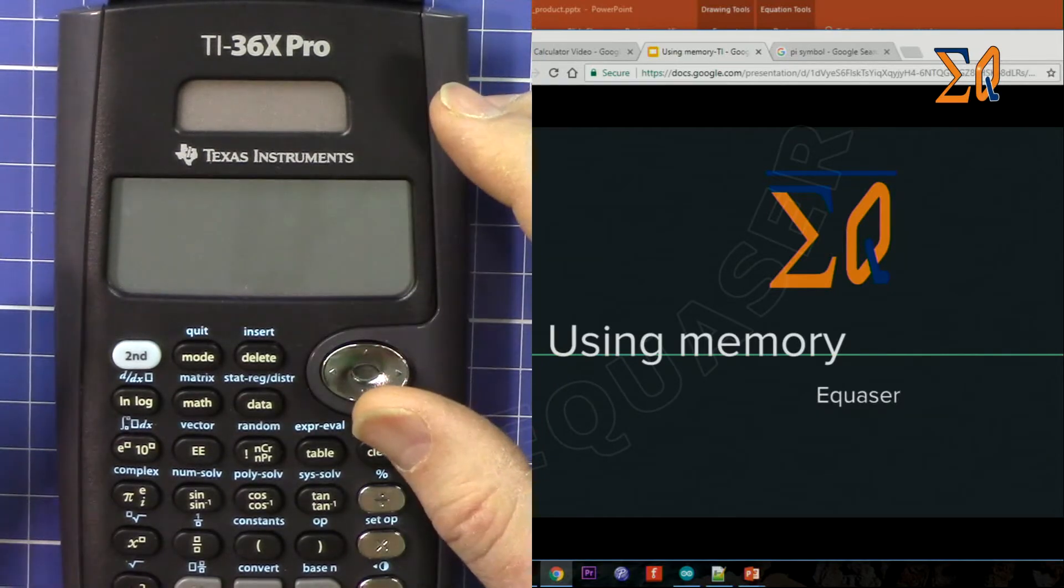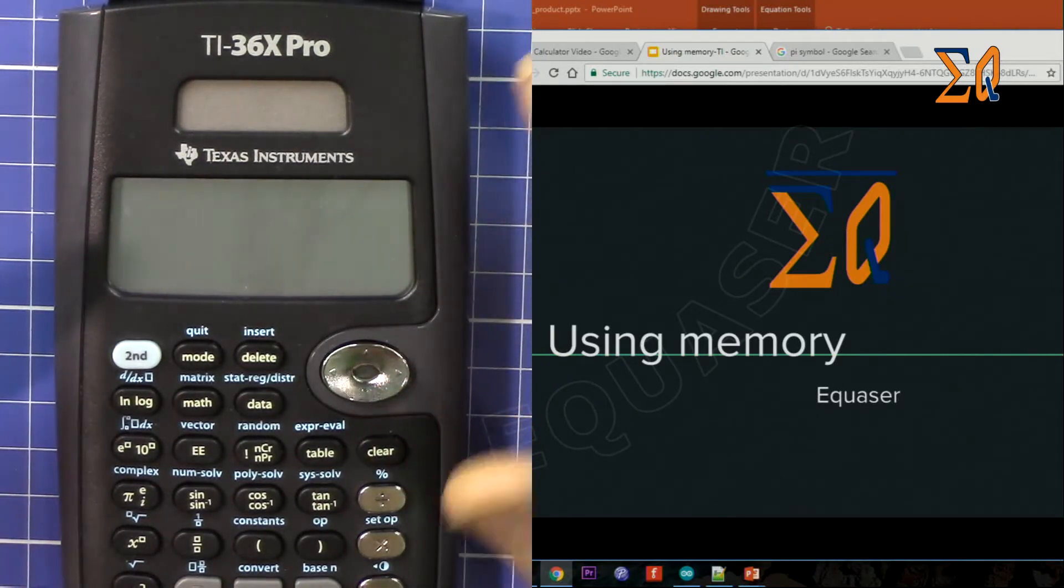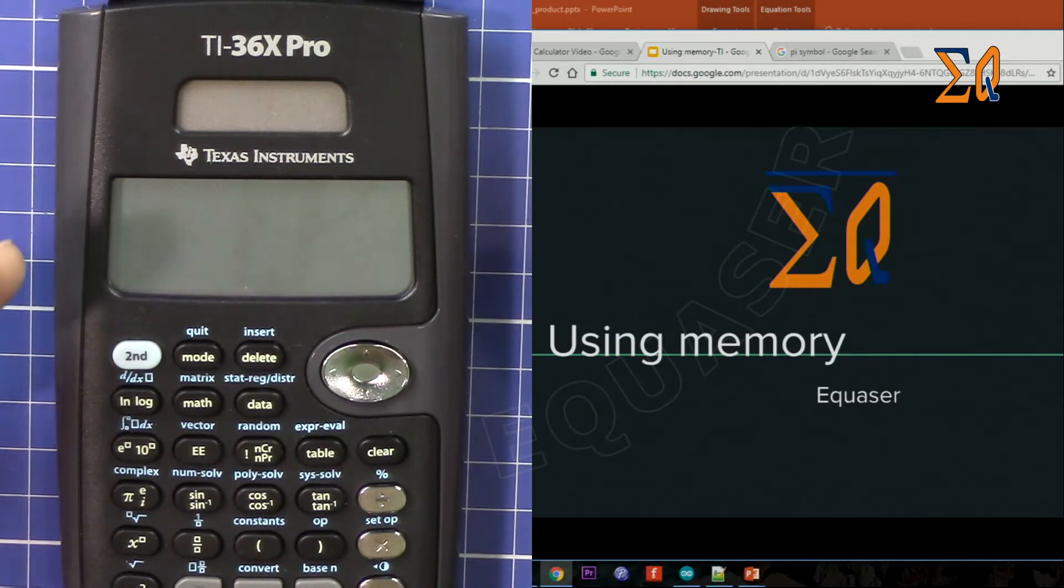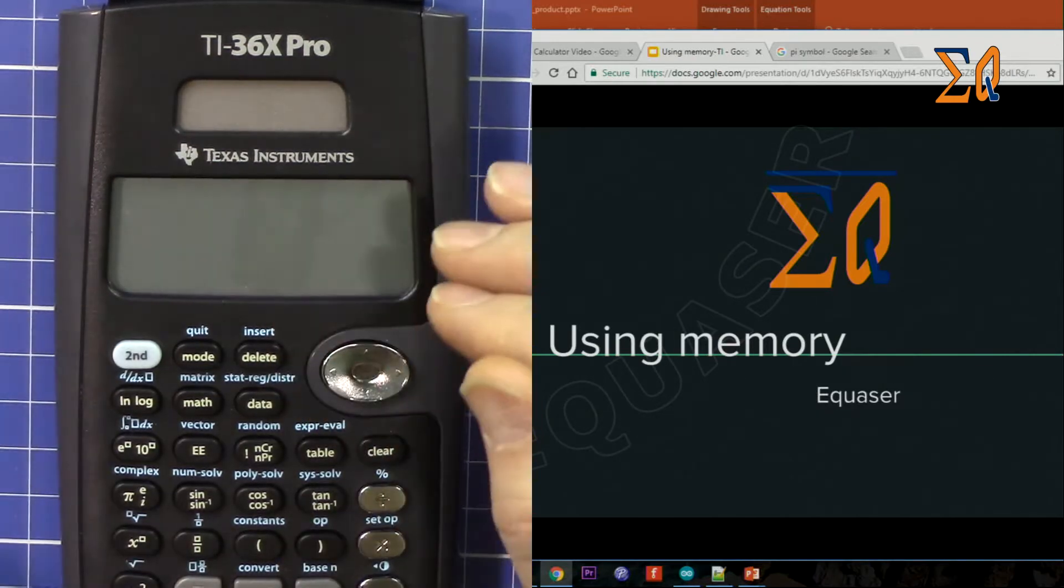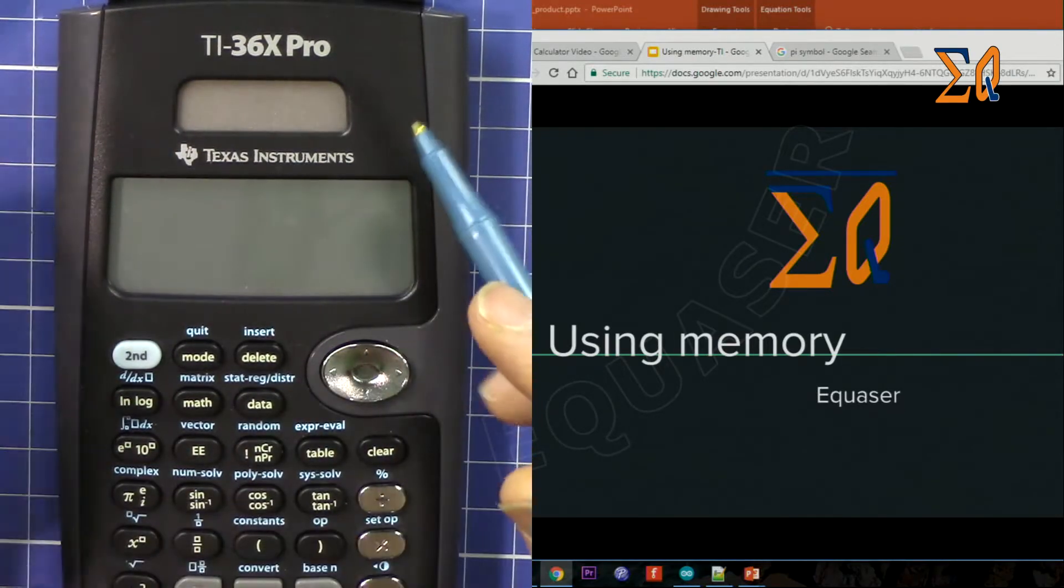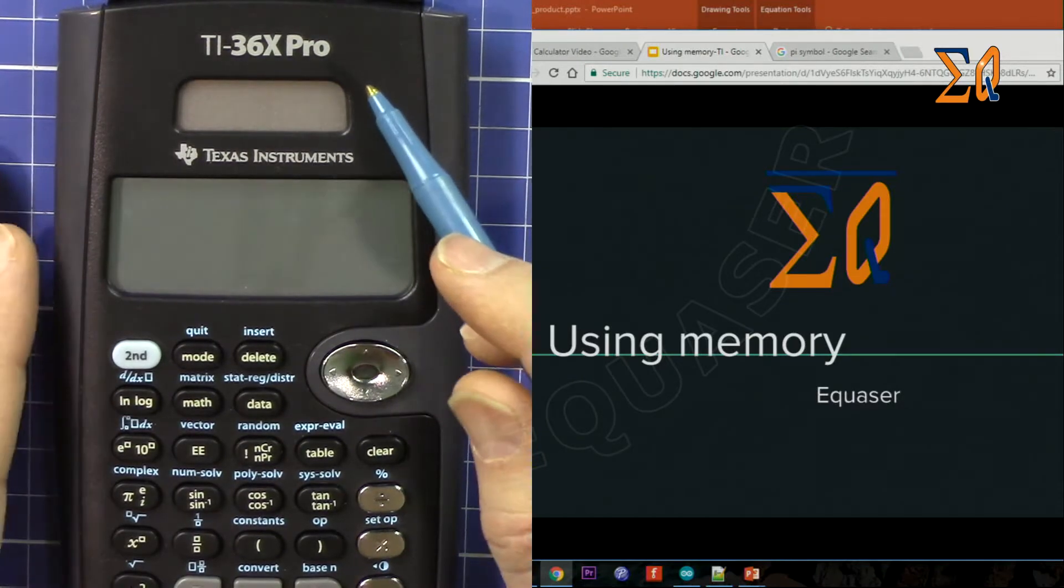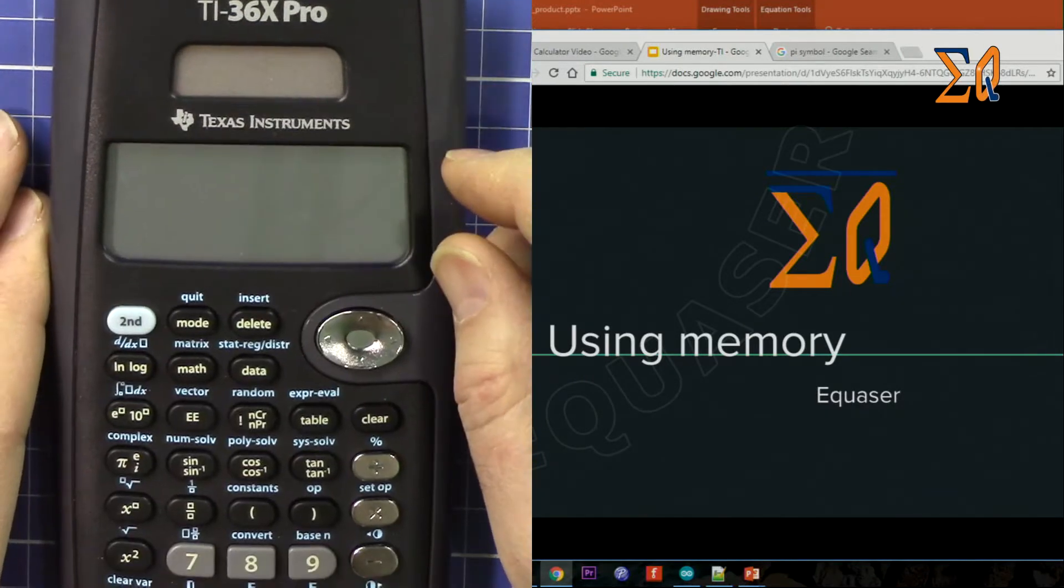Many times you need to do some calculation and the value of the calculation will be used in many steps later in other calculations, so you need to store the value in the memory and then later on use it. So let's see how we can do that.